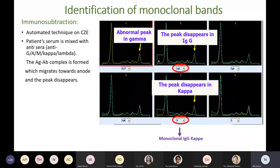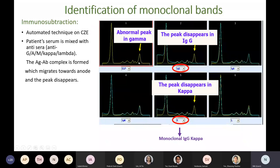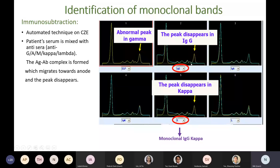We can use immunosubtraction to identify monoclonal proteins on capillary zone electrophoresis. This is a fully automated process where patient serum is mixed with antisera for G, A, M, kappa, and lambda. When an antigen-antibody complex forms, it migrates toward the anode and the peak disappears. The monoclonal peak is identified when the peak disappears with a given heavy chain and light chain antibody. In this example, a clear monoclonal band in the gamma region disappeared with IgG antiserum and with kappa antiserum, identifying it as monoclonal IgG kappa.